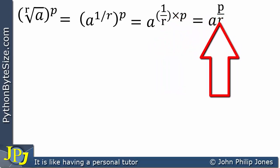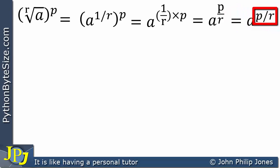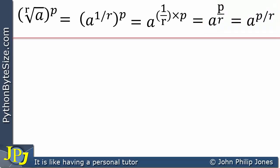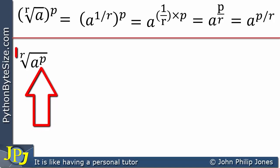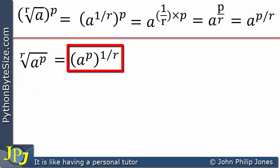This is because p multiplies the one on top to give p, and r remains on the bottom. Alternatively, you can write this as a raised to the power p divided by r — both forms are essentially the same, just written slightly differently. Now consider the second example: here we raise the base a to the power p first, and then take the rth root.